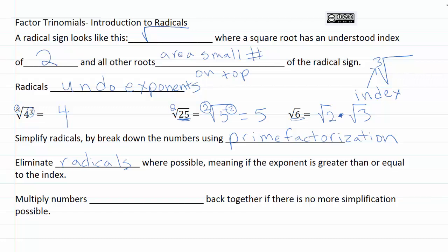Where possible means if the exponent is greater than or equal to the index. And then once we're done eliminating the radicals where possible, we're going to multiply the numbers under matching radicals back together — meaning they have the same index. So we need to make sure that the little number that goes with our root is the same in order to be able to multiply the numbers back together.